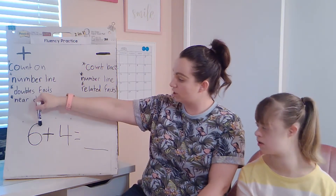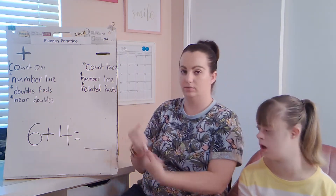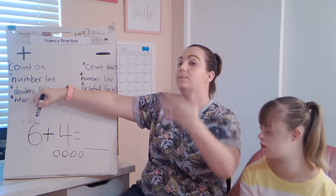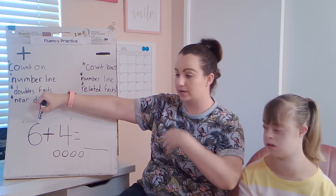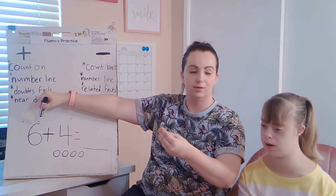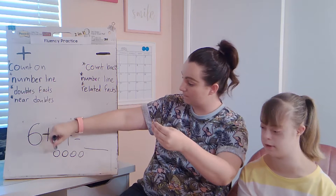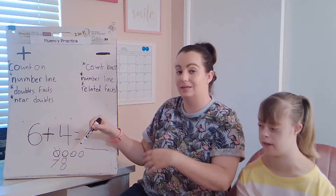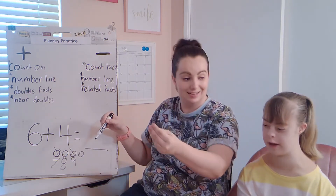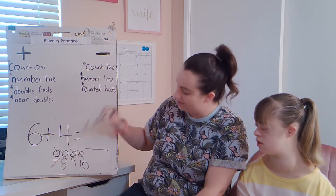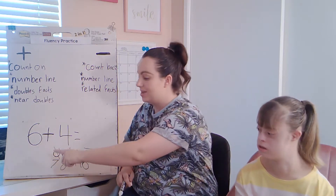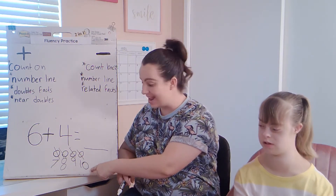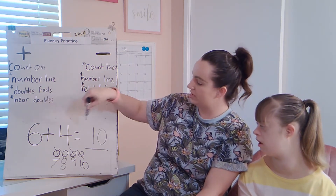Remember, count on — you start with the bigger number: six. Then you count on this many more. I'm going to draw four circles to help me keep track as I count on. That means I start at six and keep counting. If I add on or count on, what number comes after six? Seven. Then what comes next? Eight. And then what comes next? Nine. Keep counting on — what comes after nine? Ten. That was me counting on four more: six, then seven, eight, nine, ten. The last number I wrote was ten. So six plus four equals ten.